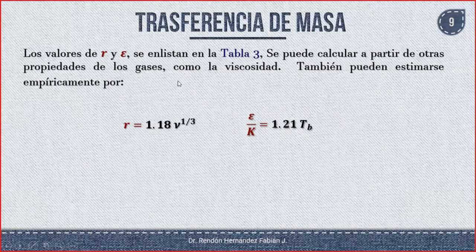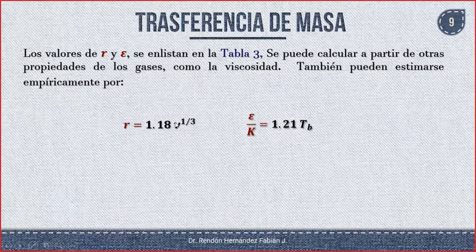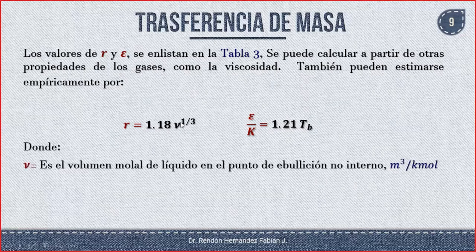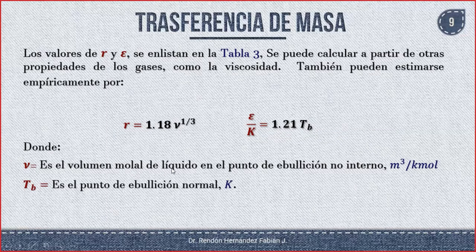Se puede estimar empíricamente. R es igual a 1.18 por el volumen a la 1/3. Y ε/K es igual a 1.21 por la temperatura de ebullición, donde el volumen es el volumen molal del líquido en el punto de ebullición normal en metros cúbicos sobre kilomol, y la temperatura de ebullición normal está en Kelvin. Estas son las dos maneras de calcular esos datos: ya sea en la tabla o con estas ecuaciones.